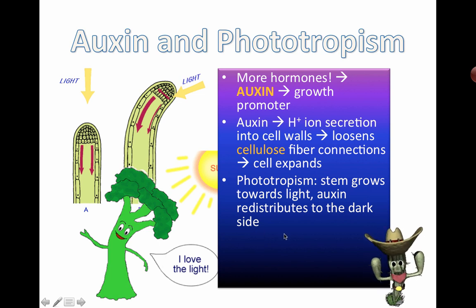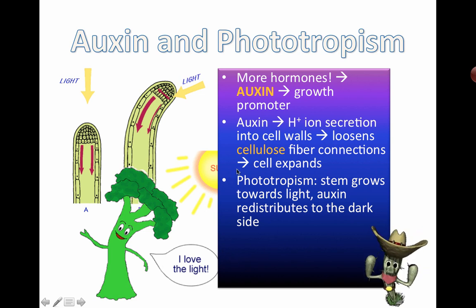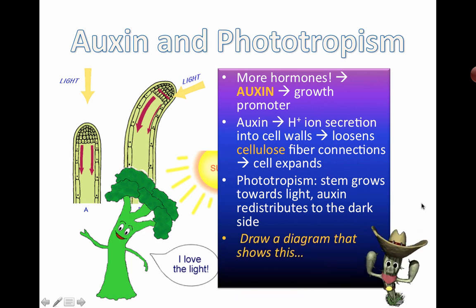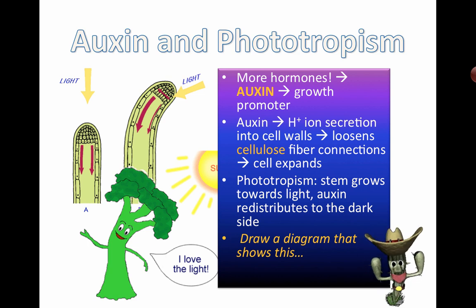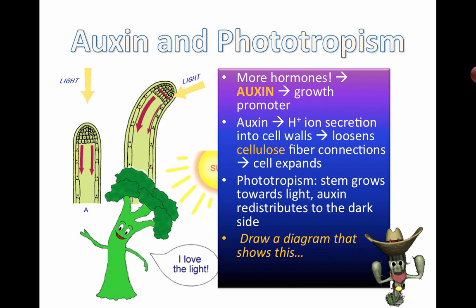That sounds like something out of Star Wars — auxin redistributing to the dark side! That's a great idea for a future lesson. So that's basically it: auxin and its role as a hormone in helping plants grow toward light. That's phototropism, and that covers the key points about plant growth we just went through.